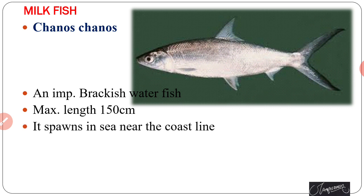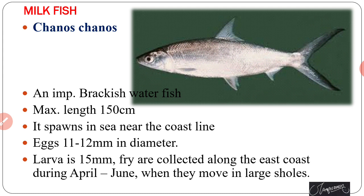Milk fish spawns during the rainy season, near the sea coastline. Eggs are about 11 to 12 millimeters in diameter and larvae are 15 millimeters. The fries of this fish are collected along the east coast during April to June, when they move in large shoals.